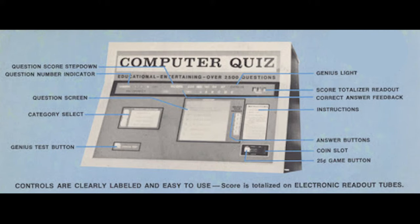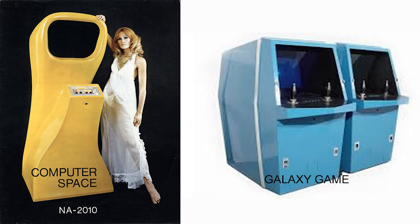In 1971, both teams installed their prototypes in local businesses near Stanford — Galaxy Game in the Student Union and Computer Space at the Dutch Goose just off campus. Galaxy Game received a lot of attention, but because Pitts and Tuck only charged 10 cents a game, they didn't come anywhere close to breaking even. They made a second improved version but couldn't justify sinking more money into the project. The Galaxy Game prototype remained in the Student Union until its display processor began to fail in 1979. Computer Space performed well enough in its test run that Nutting ordered 1,500 units manufactured, but they sold poorly — perhaps because the Dutch Goose had been a tech college bar, and less savvy patrons found the controllers too complex. Despite this setback, Nolan Bushnell was only just getting started with Atari. Just the next year, he would attend a Magnavox trade show and play a little game called the Odyssey, something that would prompt him to change the arcade industry forever.